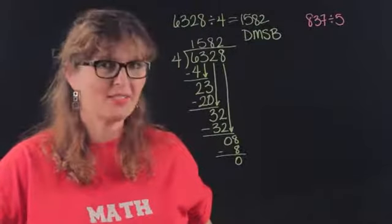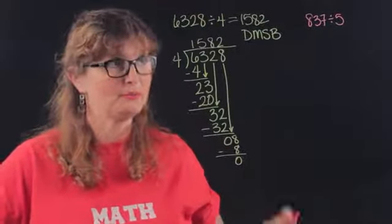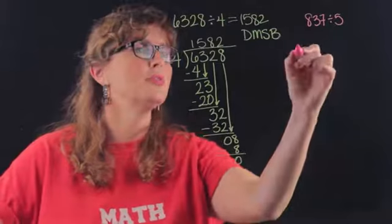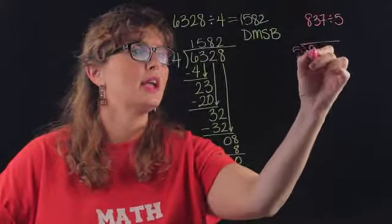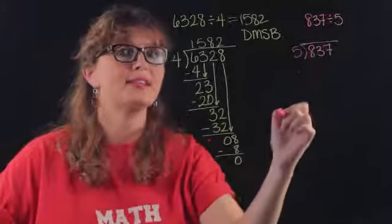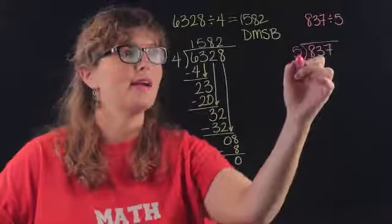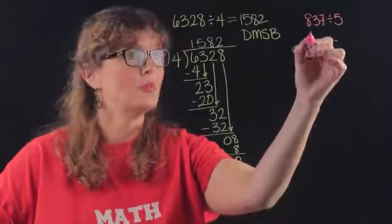So let's look at the other one because this one was kind of nice, we had no remainder. So we'll do the same thing. Five goes into eight hundred and thirty-seven, let's see how many times five goes into eight: once.